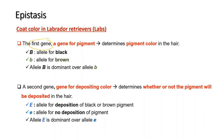Coat color in Labradors is represented by two different genes. The first gene determines pigment color in the hair — either black or brown — represented by capital B for black and small b for brown; black is dominant over brown. The second gene determines whether the pigment will be deposited in the hair or not: capital E represents the allele for deposition of black or brown pigment, and small e represents no deposition. The allele for deposition is dominant over the allele for no deposition.